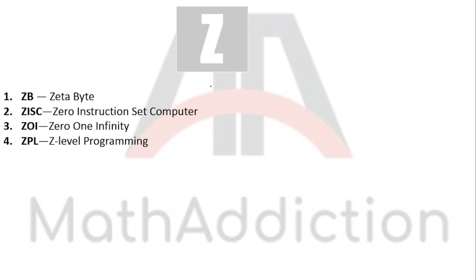Now Z full forms. ZB: Zettabyte — note the correct pronunciation is 'Zetta' not 'Zebra,' though some say 'Zebra' because of the Z. ZISK: Zero Instruction Set Computer. ZOI: Zero One Infinity. ZPL: Z Label Programming Language.